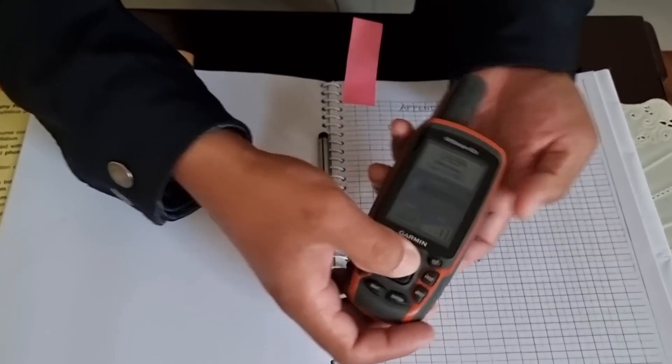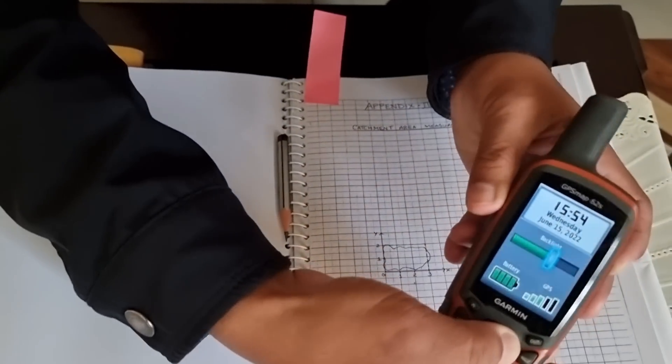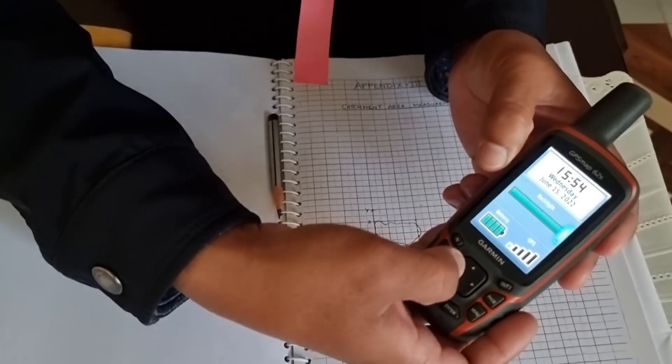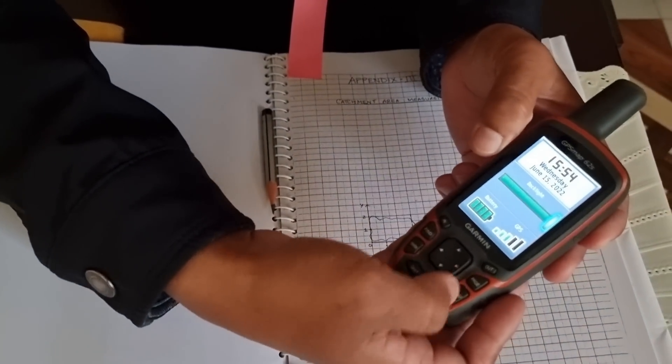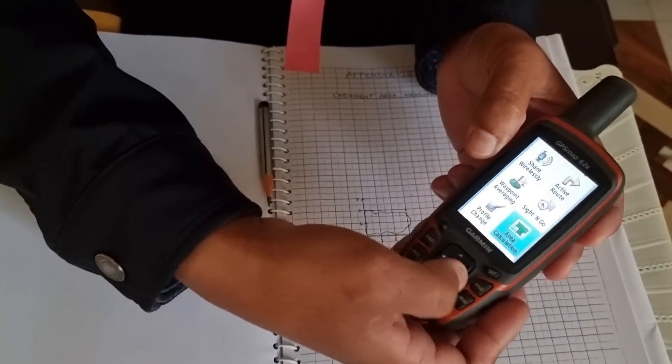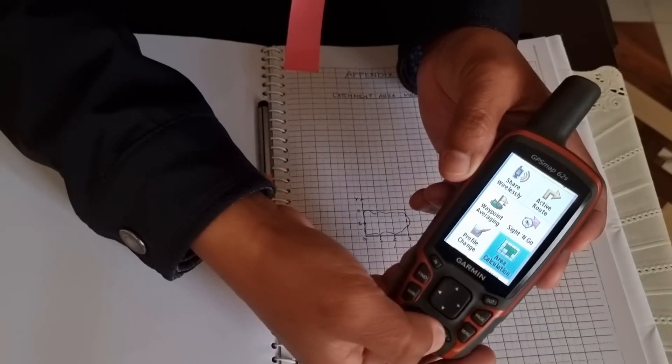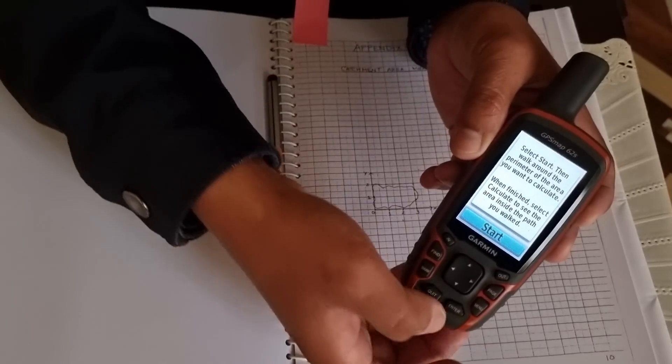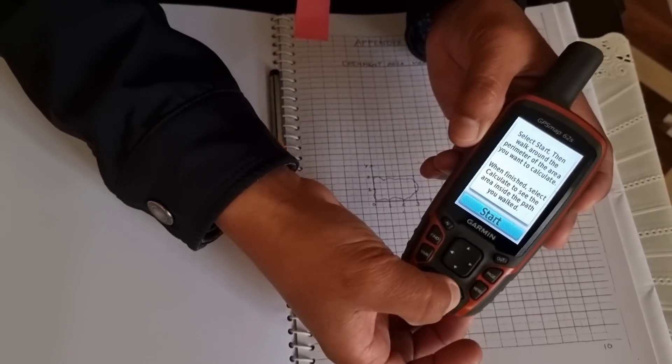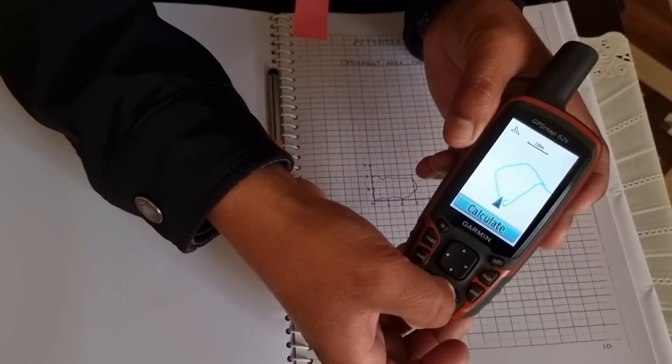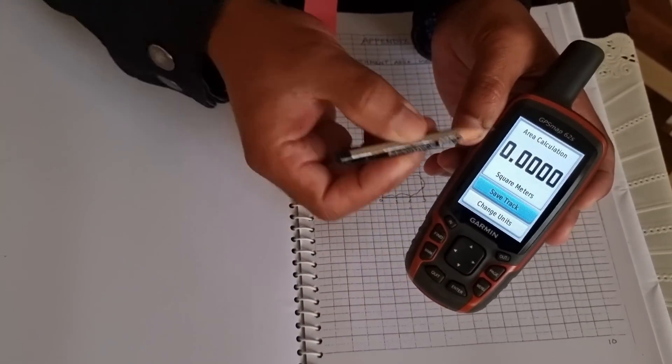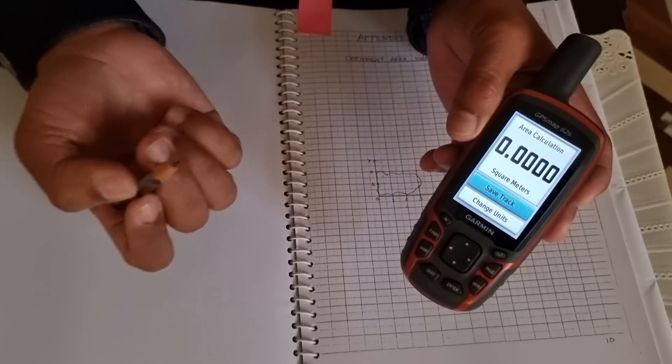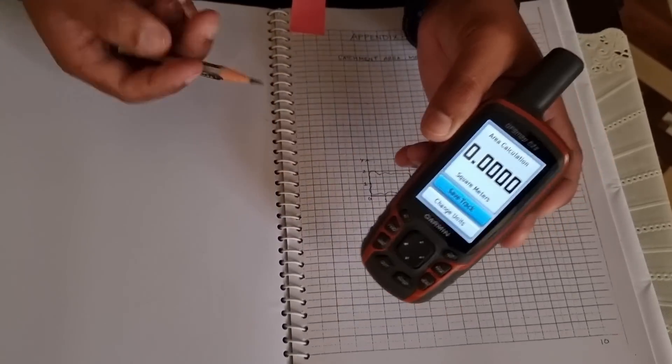I'll just increase the brightness a bit to be clear. You can go to area calculation over here, then you press enter. Then when you're in the place you can press enter, you can start walking and then you press calculate and you'll get your area like this. So usually for me I keep it in hectares or square meters and sometimes acres also. So this is the second method but be careful to walk along the ridge line only.